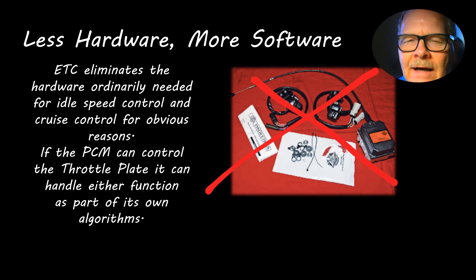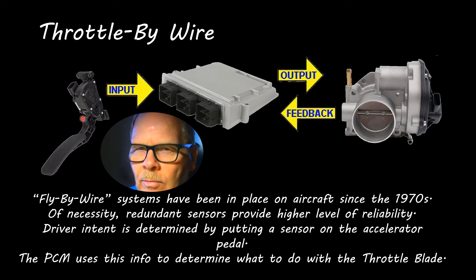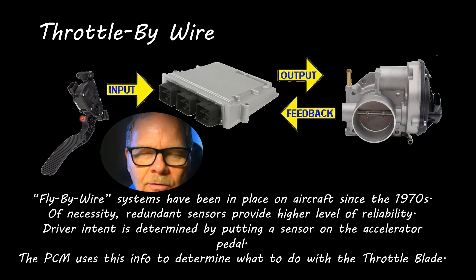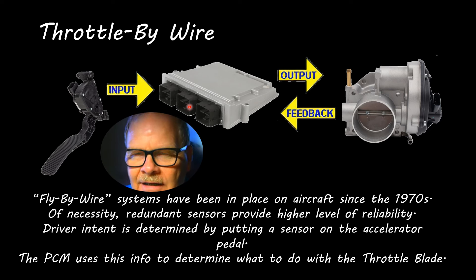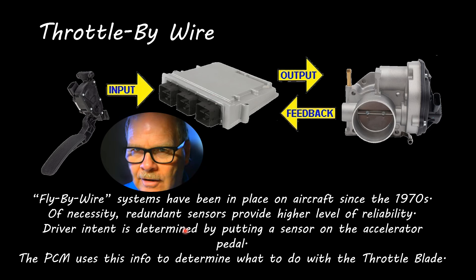With throttle-by-wire you get input from redundant sensors on the accelerator pedal. On the old 7.3 Power Stroke diesels from 1994 up to about 2003, they had a potentiometer and an idle validation switch — if those two didn't agree it would only idle and you'd have to replace the accelerator pedal. The newer pedal assembly has multiple potentiometers that tell the PCM what you're doing with your foot. They're spring-loaded so it feels like the old accelerator. The output to the throttle body opens the throttle plate, and you get feedback from the TP sensor on the throttle body so the engine controller can confirm how far it's actually opened.